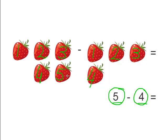So how many strawberries would we have left? So we have to cross off 4. 1, 2, 3, 4. So what do we have left? Yes, 1 strawberry. Therefore 5-4 is 1.